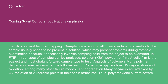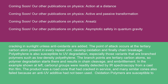UV degradation: many polymers are attacked by UV radiation at vulnerable points in their chain structures. Polypropylene suffers severe cracking in sunlight unless antioxidants are added. The point of attack occurs at the tertiary carbon atom present in every repeat unit, causing oxidation and finally chain breakage. Polyethylene is also susceptible to UV degradation, especially those variants that are branched polymers such as low-density polyethylene. The branch points are tertiary carbon atoms, so polymer degradation starts there and results in chain cleavage and embrittlement. In the example shown at left, carbonyl groups were readily detected by IR spectroscopy from a cast thin film. The product was a road cone that had cracked in service, and many similar cones also failed because an anti-UV additive had not been used.